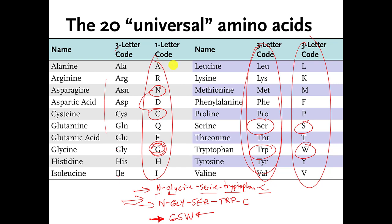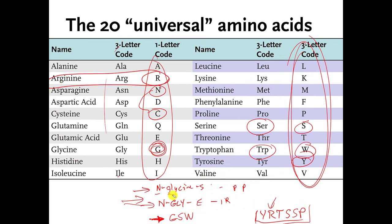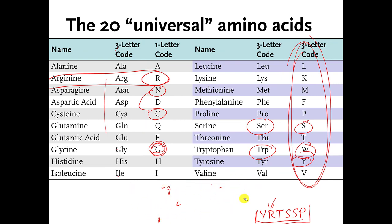Again, I don't expect you to memorize these, but I expect you to be able to use and interpret them. If you see something like this and I say this is a protein molecule, what amino acids is it made of? — you should be able to use a table like this to say, oh, Y is tyrosine, R is arginine, et cetera. That's what I expect you to be able to do with these different types of abbreviations for the 20 universal amino acids.